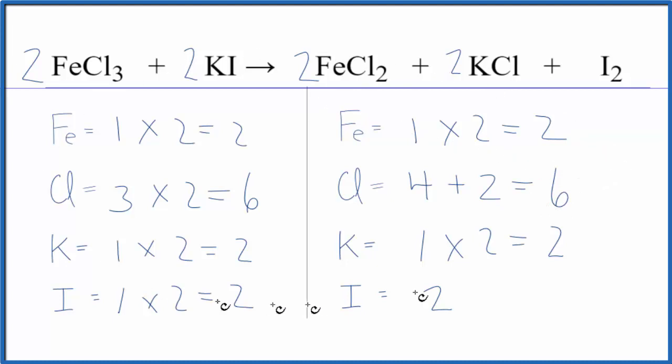So this is the balanced equation for FeCl3 plus KI. Often when you get an odd number like this, if you get it to an even number, that can make the balancing easier. Then sometimes things just work out.